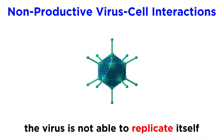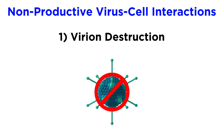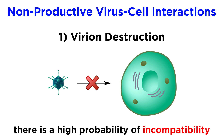A nonproductive interaction means that the virus is not able to replicate itself. However, there is some nuance here. There are three possible outcomes for a nonproductive interaction. The first outcome is that the virion and its genome is completely destroyed. Ninety-nine percent of the time, if you take a random cell and a random virus, they won't be compatible, and the virus just gets destroyed.